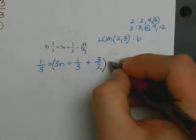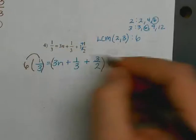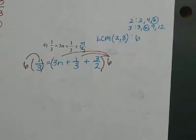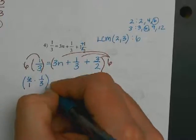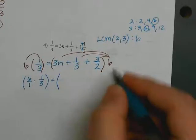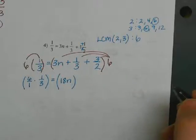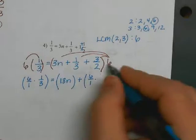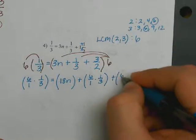Step three: multiply both sides of the equation by the LCM. So we multiply both sides by six — six goes to each term via the distributive property. Rewriting it: six-over-one times one-third on the left equals the quantity of six times three-n, which is simply 18n, plus six-over-one times one-third, plus six-over-one times three-halves.